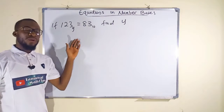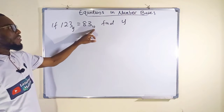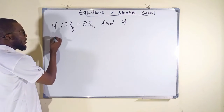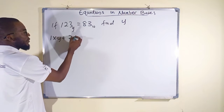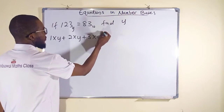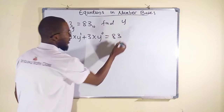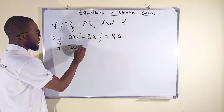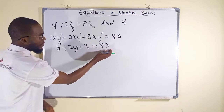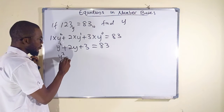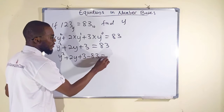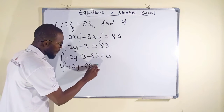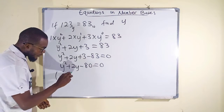The fourth question says: if 123 in base y equals 83 in base 10, find y. Since 83 is in base 10, we convert 123 in base y to base 10 and equate. This gives 1×y² + 2×y + 3×1 equals 83, so y² + 2y + 3 = 83. Bringing 83 over gives y² + 2y minus 80 = 0, which is a quadratic equation we solve by factorization.